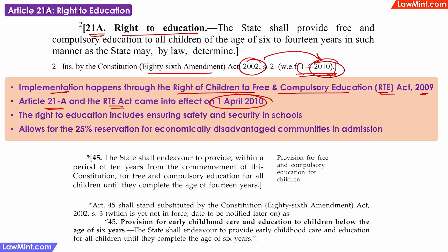Later court decisions have expanded upon the interpretation of Article 21a to include providing safety and security in schools and the 25% EWS reservations.